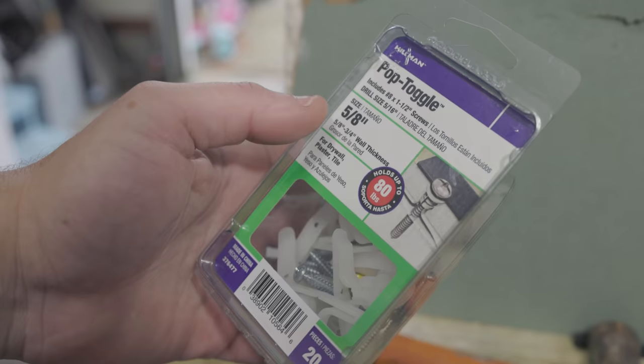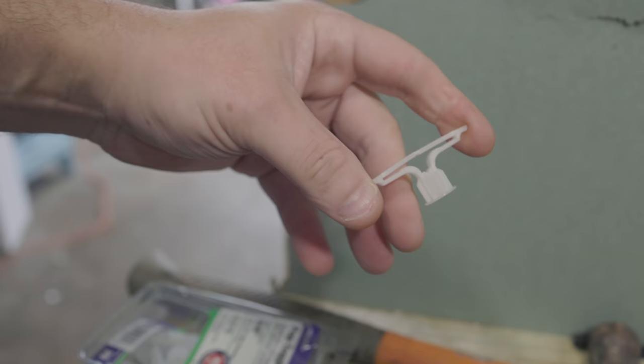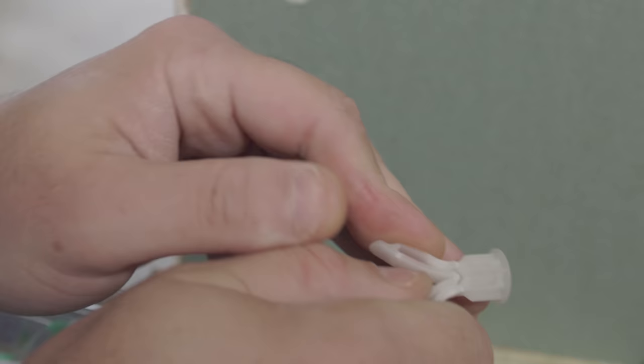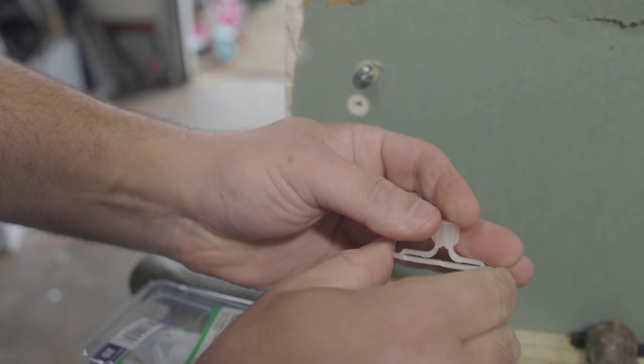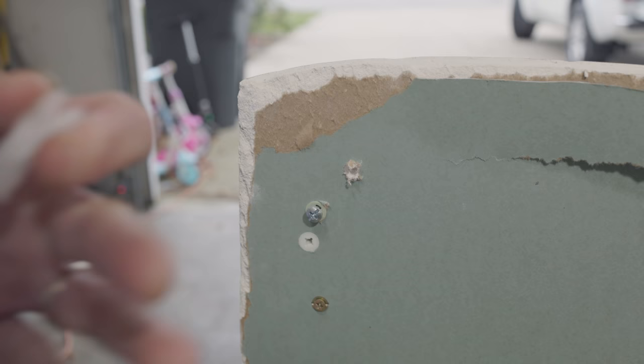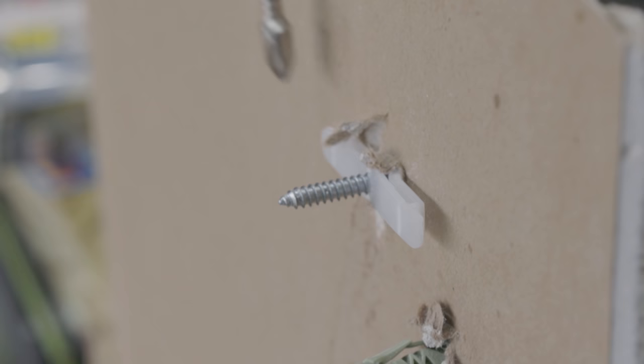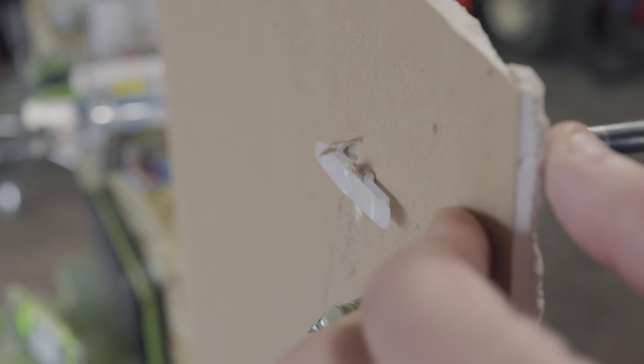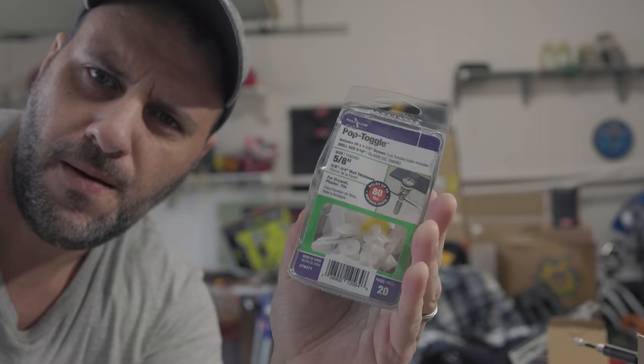Now we've got something called pop toggle. 80 pounds. My God, these are horrible. You got to push down and like bend it in like this. You still got to drill a hole. You put this in there like this through the hole. Tap that in a little bit. So that basically prevents it from opening up. Now, if I were to loosen this up and take it out again, how are you going to get that thing back out of there? Pop toggle.